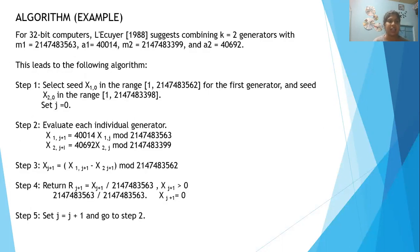Let's go through the algorithm and example. For a 32-bit compiler, we take k equals 2, two generators,